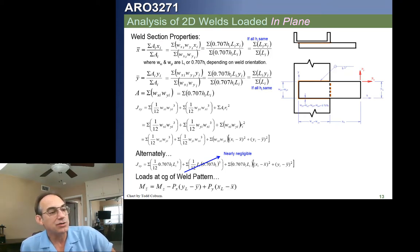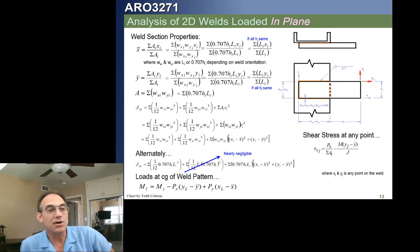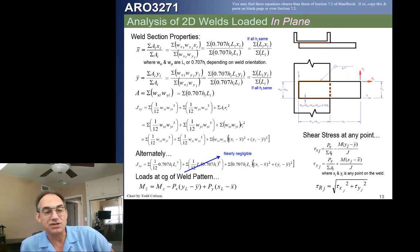We then calculate loads at the centroid of the weld pattern the same way as for fasteners. We can then calculate shear stress using equations for the horizontal component τ_x, vertical component τ_y, and the resultant shear stress. Note that when converting moments, we use the right-hand rule sign convention throughout.